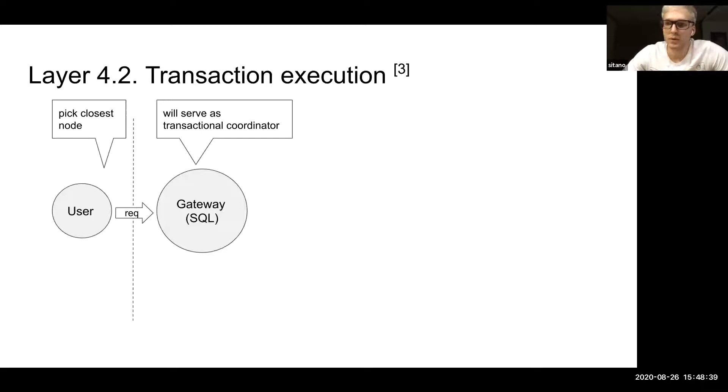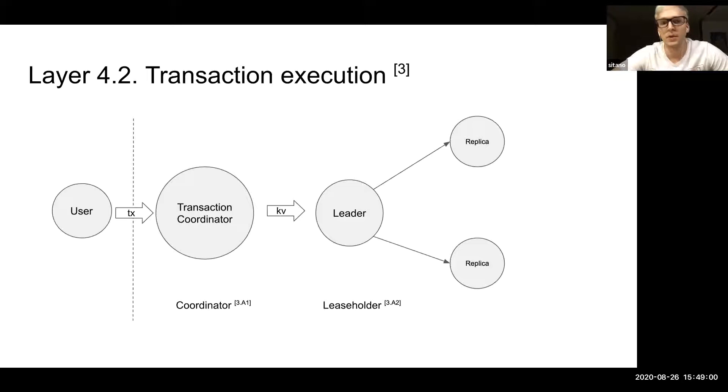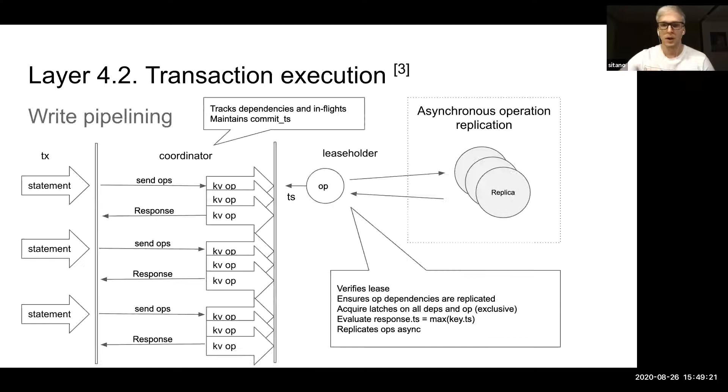First of all, the user selects the closest gateway node to be a gateway for the transactional processing. This node is called gateway, which will be a transactional coordinator. The user feeds the transaction coordinator with transactional statements that are SQL expressions that are then translated into key-value operations that are then communicated by the coordinator with the lead replicas of the corresponding groups to be replicated and evaluated.